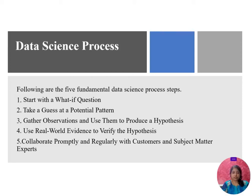Let's see the data science process steps. There are five fundamental data science process steps. Let's start with the 'what if' question. The 'what if' question means: suppose a person wants to buy a car — we can find out what type of car the person will buy.